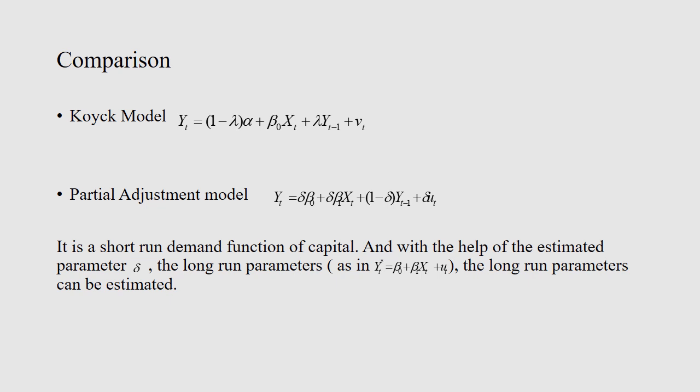The difference is mainly observed in the coefficients. In the partial adjustment model, the final equation yt = delta * beta_naught + delta * beta_1 * xt + (1 - delta) * yt_minus_1 + delta * ut is a short-run demand function for capital. With the help of the estimated parameter delta — which is the coefficient of yt_minus_1 — you can find the long-run parameters. When adjusted with delta * beta_naught and delta * beta_1, the parameters beta_naught and beta_1 can be calculated, and the long-run equation yt_star = beta_naught + beta_1 * xt + ut can be estimated.